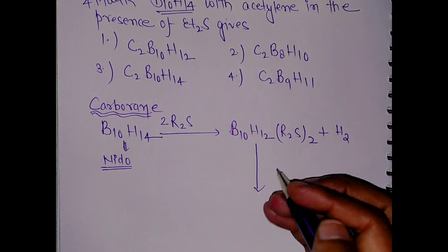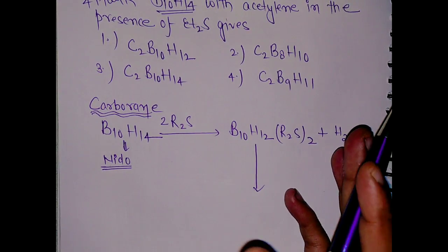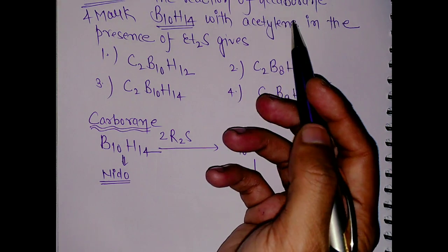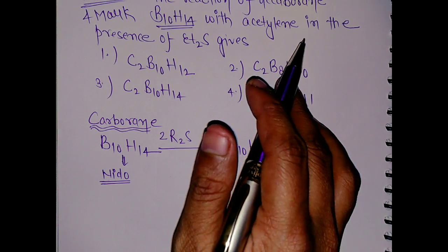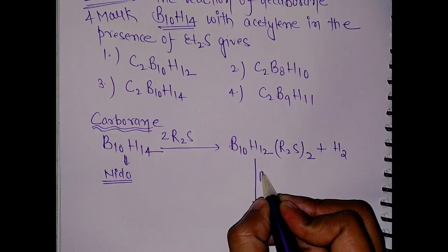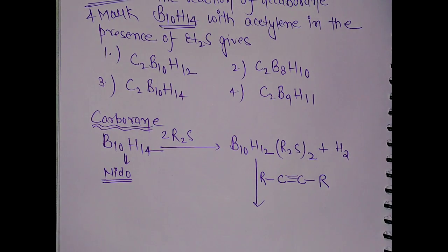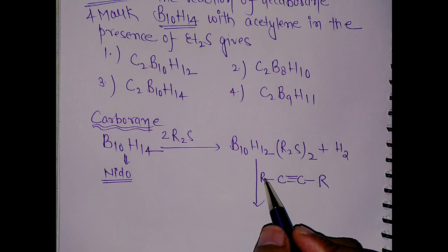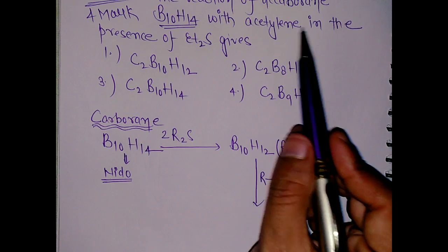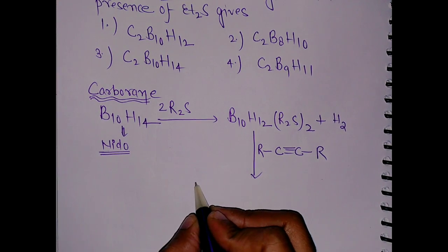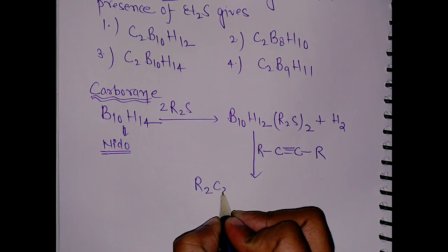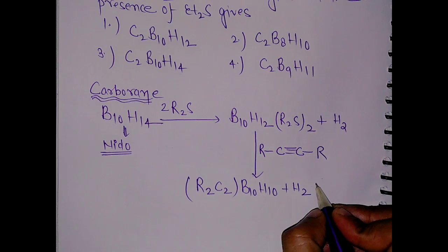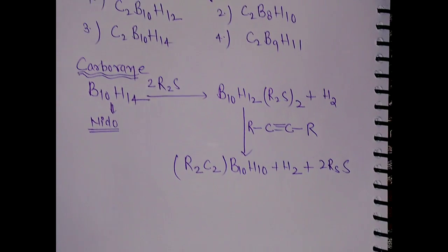Now if we treat this with acetylene — written as R–C≡C–R using a general R group for safety, since the examiner can change the groups — this time acetylene means R = H, so it is H–C≡C–H. What will happen is it will give R₂·C₂·B₁₀H₁₀ plus H₂, and the two R₂S groups will be removed.